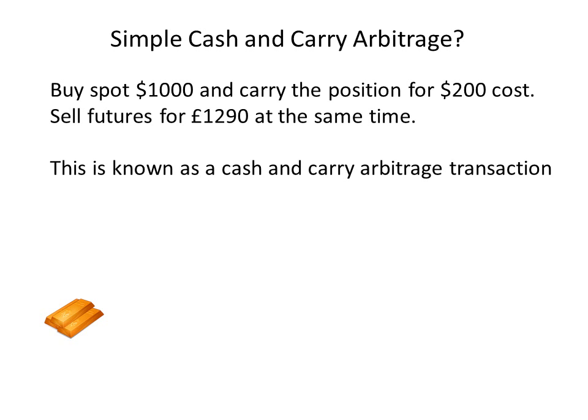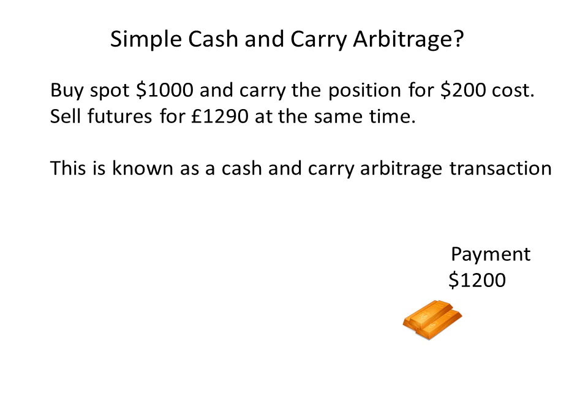To summarize: today we purchase the gold and carry the position over time, but simultaneously today we lock in a forward selling price at $1,290 via the futures contract. When we come to maturity, the payment for carrying the gold plus the original spot price comes to a total of $1,200. However, via the futures contract we've locked in a forward selling price of $1,290 — a receipt of $1,290 against a cost of $1,200 — so our net profit on the trade is $90. And that's risk-free because we simultaneously locked in the buying price, we know our carry costs, and we locked in a forward selling price today.